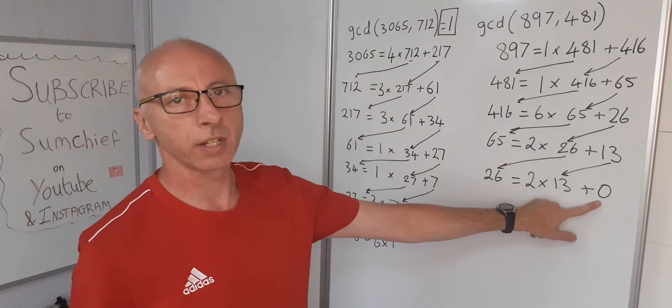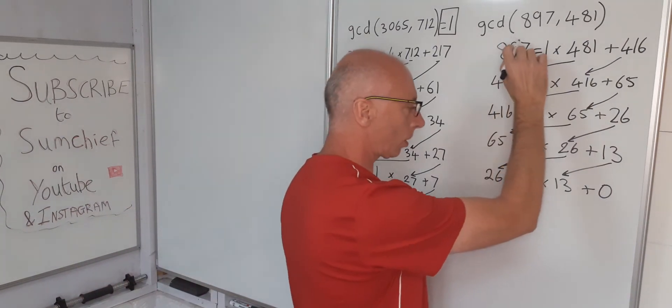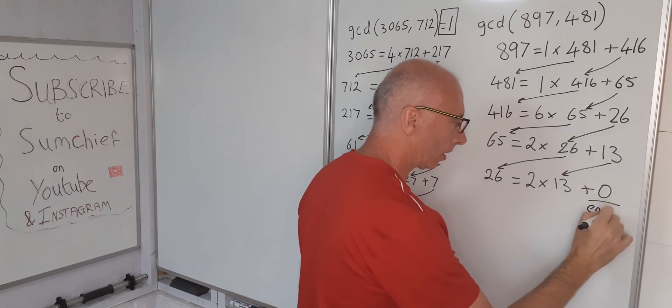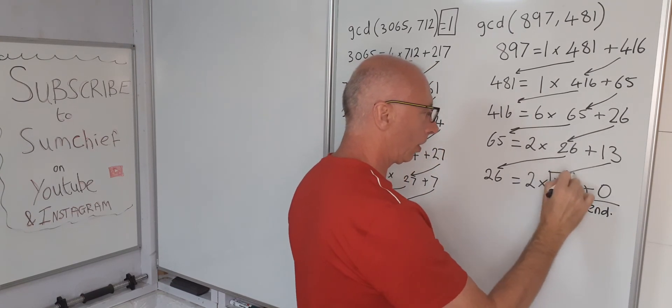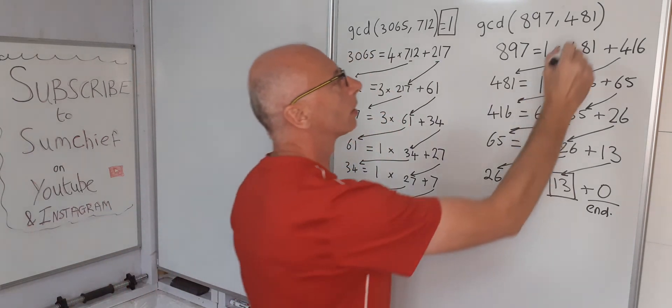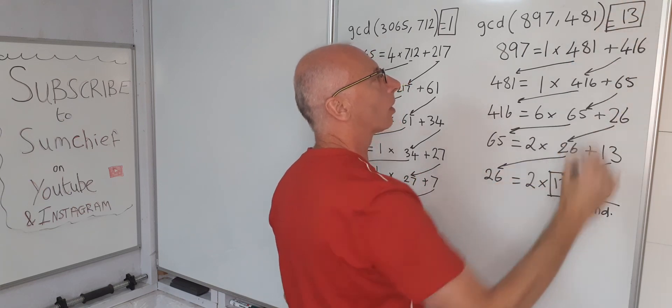So when you get a 0 remainder, that's always good news if you're looking for a greatest common divisor that is not 1. 0 signifies the end. Therefore, the greatest common divisor is actually going to be 13. And that is our answer.